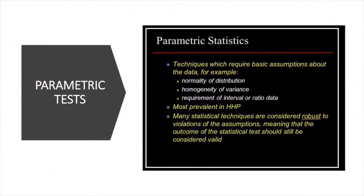There are three basic requirements to understand what kind of data should go for the parametric test. The first requirement involves certain basic assumptions: the distribution curve should be normal (normality of distribution), then homogeneity of variance, and the requirement of interval or ratio data. When you studied mean, median, and mode, you were actually doing parametric analysis. Many statistical techniques are robust to violations of these assumptions.